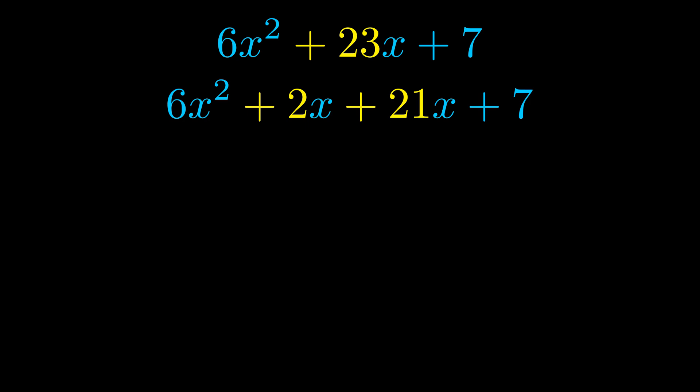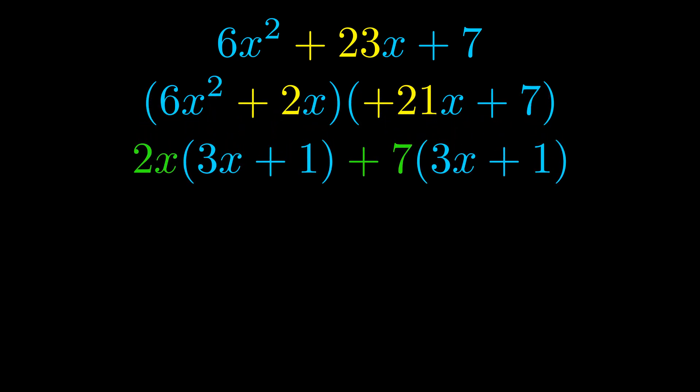Once we've done this, we go ahead and put parentheses around the first term and the last term. And we do that so that we can take the greatest common factor out of both terms. We can see the greatest common factor is now outside in green.